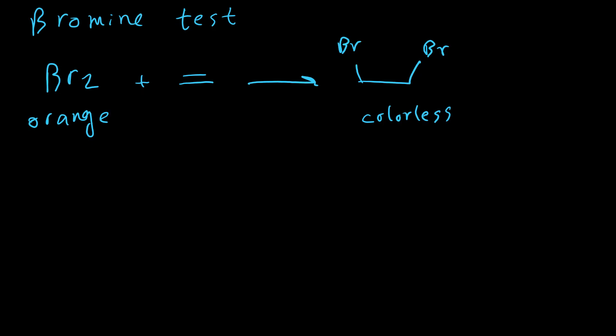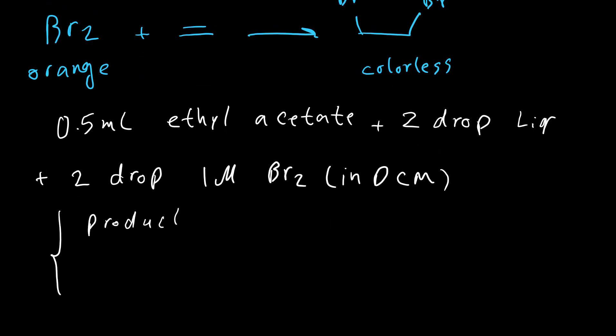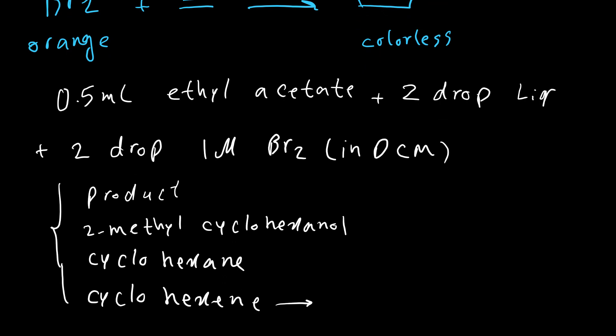For performing this test, we need to add 0.5 milliliters ethyl acetate inside a test tube. Then add 2 drops of organic compound, or I can just say 2 drops of liquid, and also 2 drops of 1 molar solution of Br2 in DCM. We are going to perform this test for our product, for our reactant which is 2-methylcyclohexanol, for cyclohexane, and cyclohexene. The last one is our reference for this test. Keep in mind, bromine is a toxic compound and also DCM is a very volatile solvent. So when you want to handle this reaction, always make sure it is inside the fume hood.